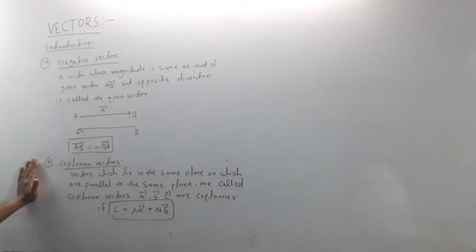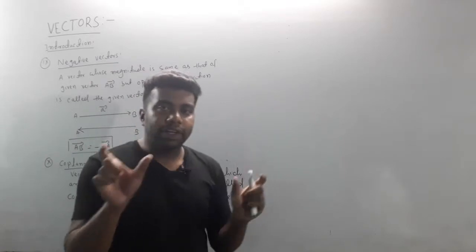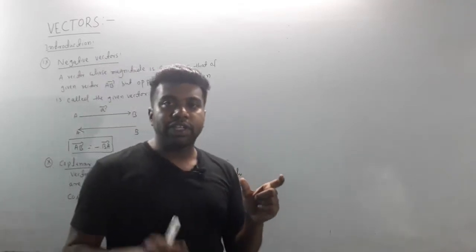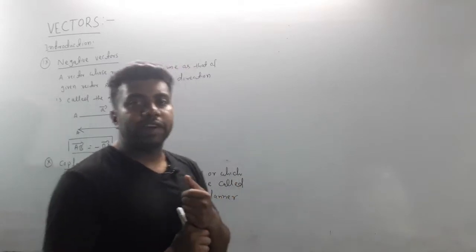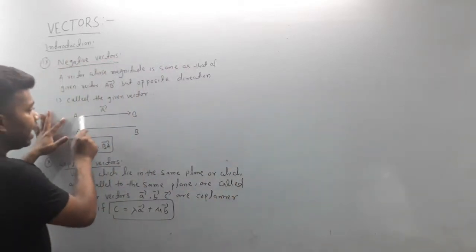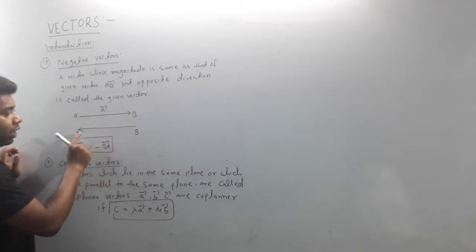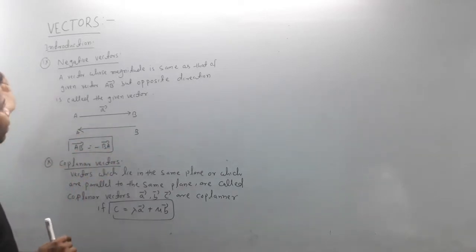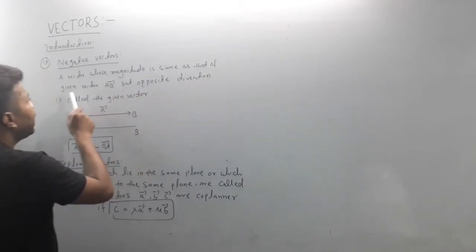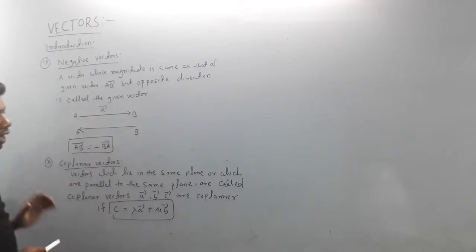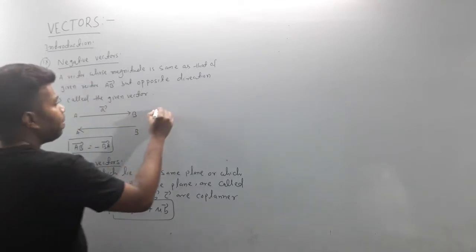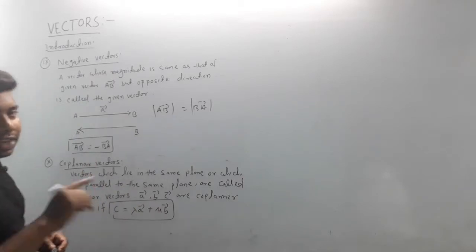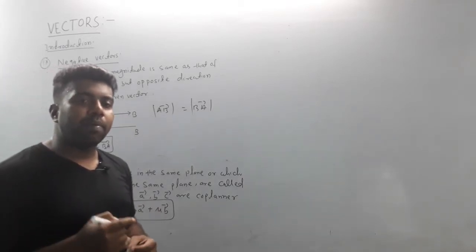Next is the negative vector. A vector that is opposite in direction to another vector with the same magnitude is called the negative vector of that vector. For example, AB and BA: the magnitude of AB equals the magnitude of BA, but the direction is opposite. So BA is the negative vector of AB.